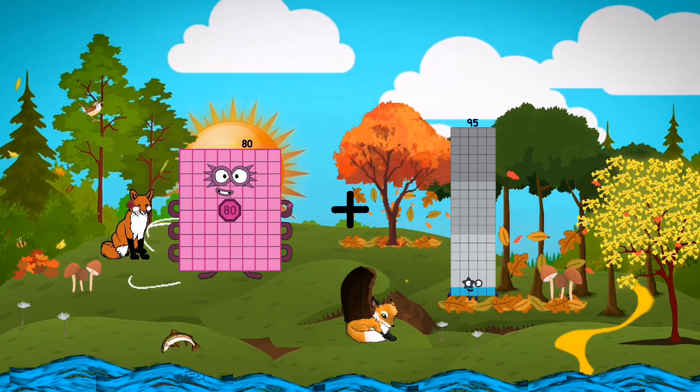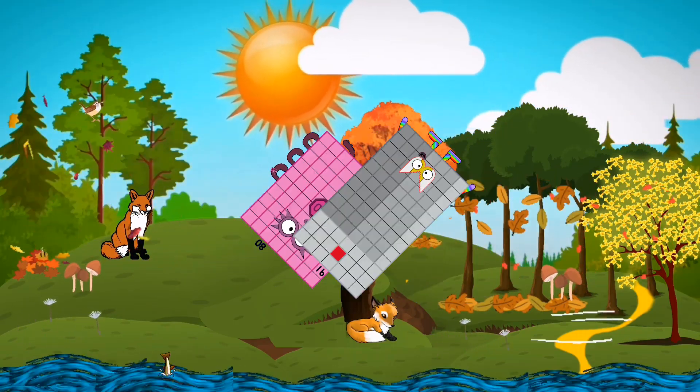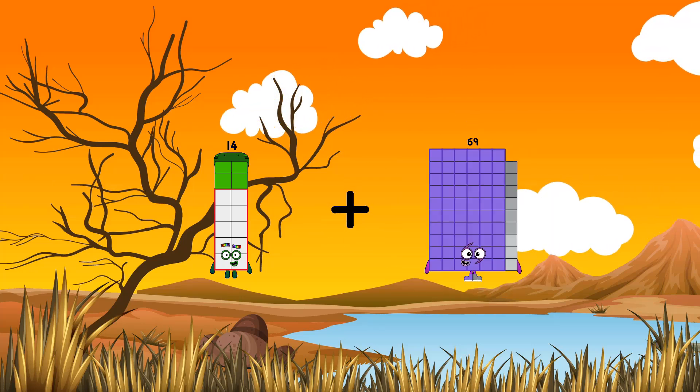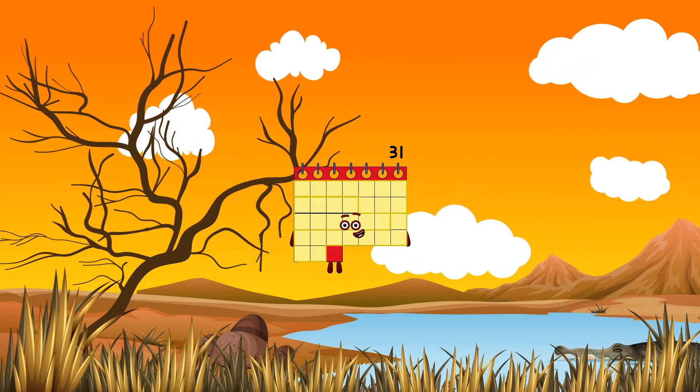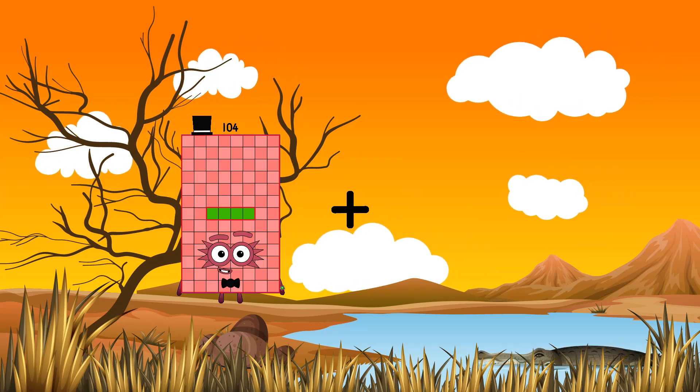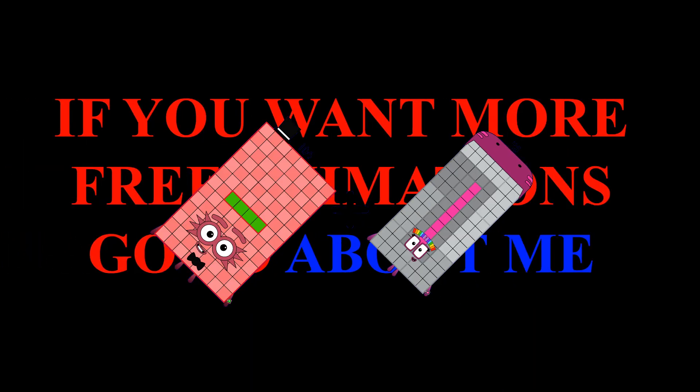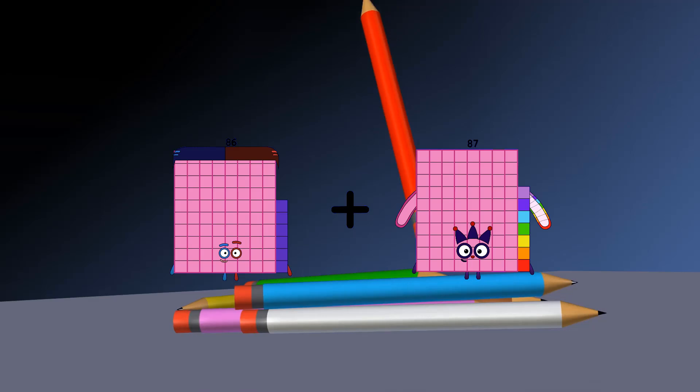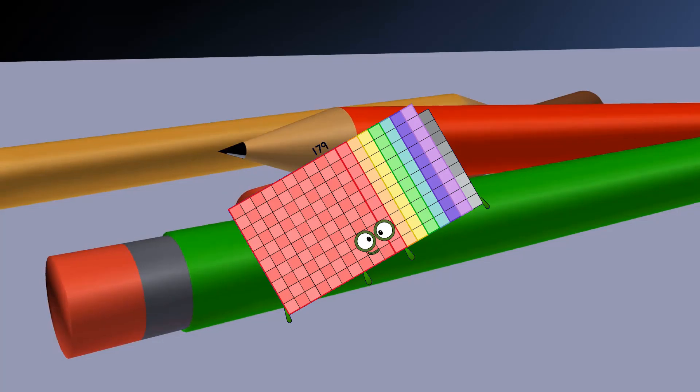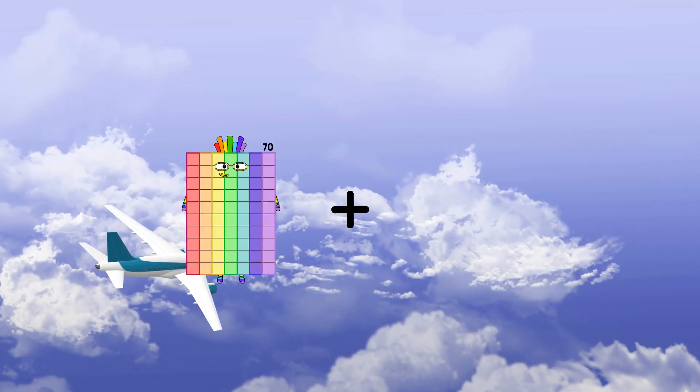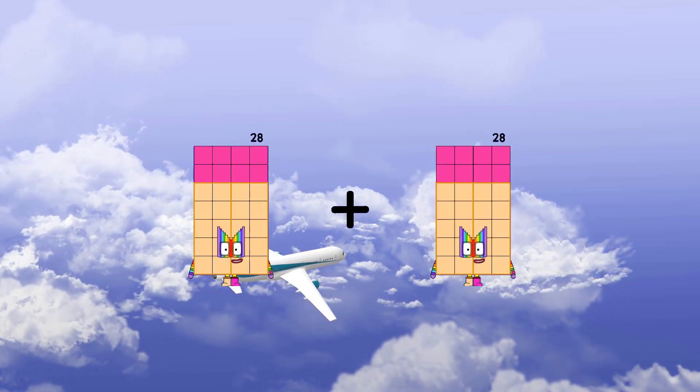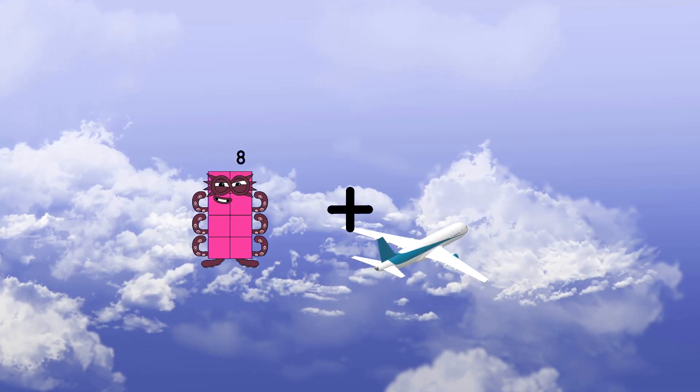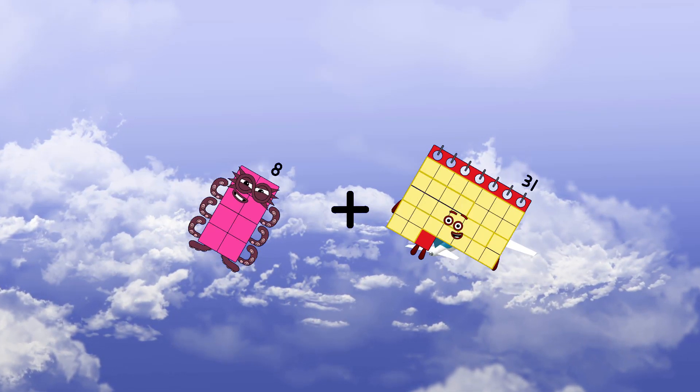80 plus 91 equals 171, 14 plus 17 equals 31, 104 plus 98 equals 203, 86 plus 93 equals 179, 28 plus 27 equals 55, 8 plus 31 equals 39.